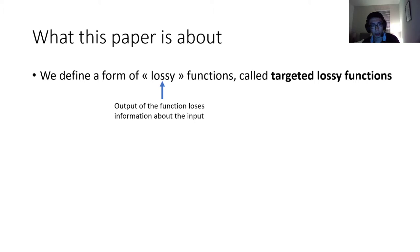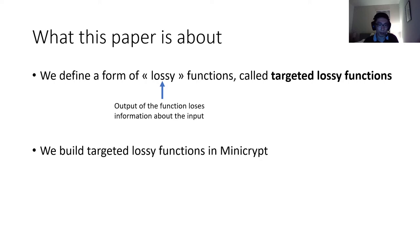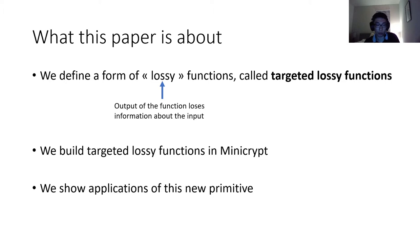So what do we do in this paper? We define a particular form of lossy functions. A lossy function is a function such that given an output of the function, it's hard to recover what particular input you started from — and that should be hard information-theoretically. We define such a variant that we call targeted lossy functions, build them from minicrypt assumptions, and show that this primitive is useful by showing some applications.